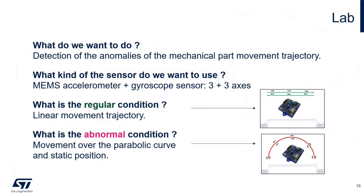So the lab. What do we want to do? We want to detect anomalies of the mechanical part movement trajectory. What kind of sensor do we want to use? It will be a MEMS sensor — we will use an accelerometer to measure acceleration and a gyroscope sensor to control the trajectory.